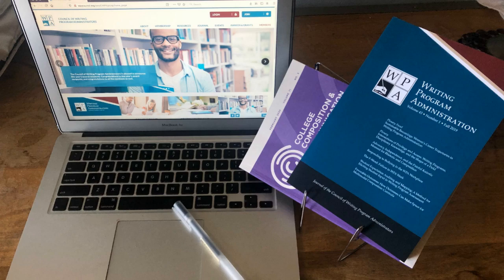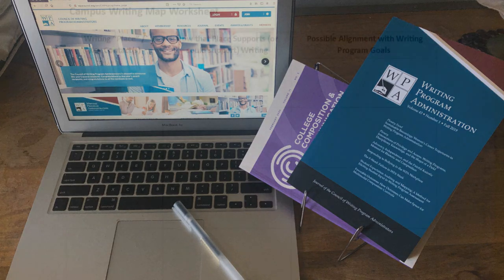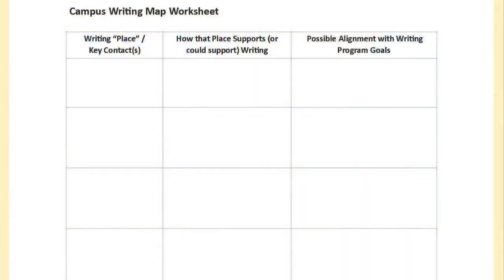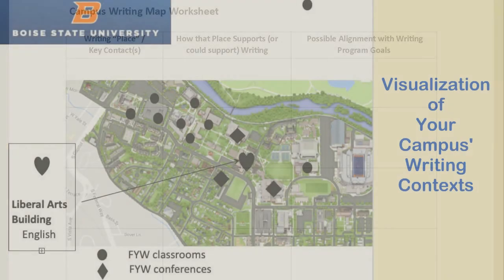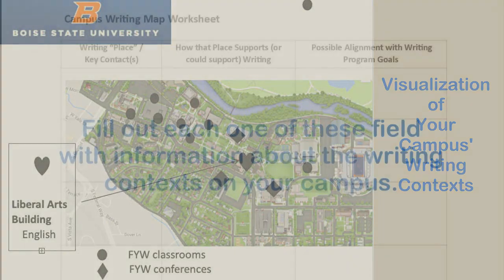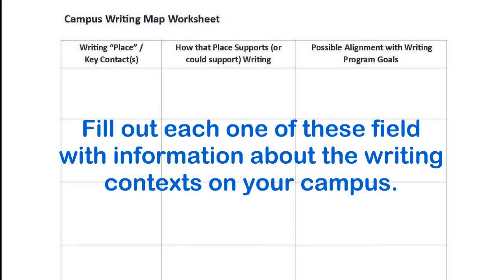To complete these exercises, you will need the map worksheet or its close facsimile, which you will find on this video, and an image of your campus map or your own visualization of it. To begin, fill out this campus writing map worksheet about your campus details and contexts. Pause and consider the places of writing on your campus, as well as your key contexts.